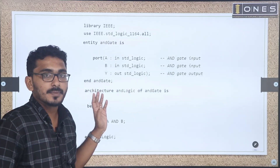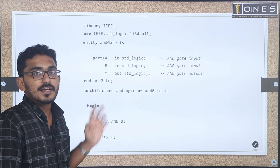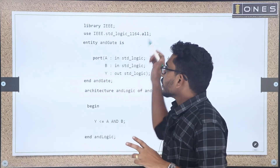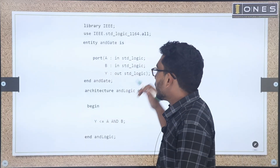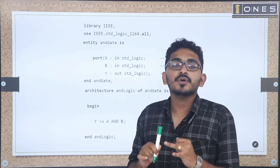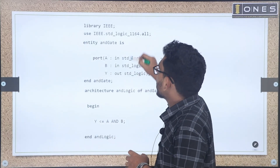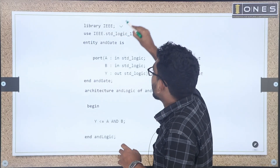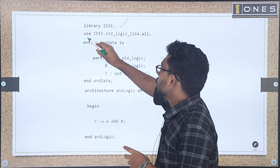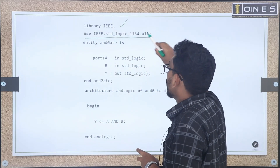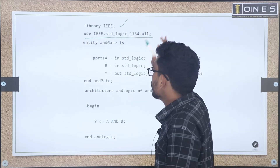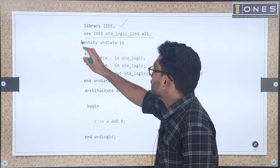VHDL is a programming language. Similar to a C program starting with header files, VHDL starts with the library: library IEEE; use IEEE.std_logic_1164.all. This is the header file, and its accessories are used. Next comes the entity part, which defines the input pins and output pins, followed by the architecture part.